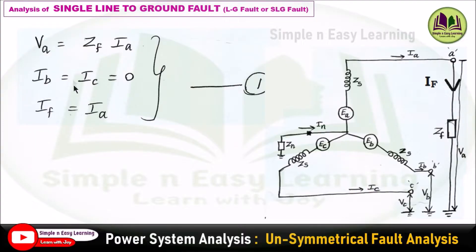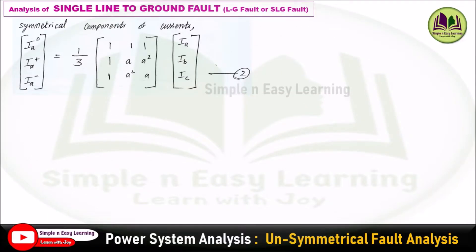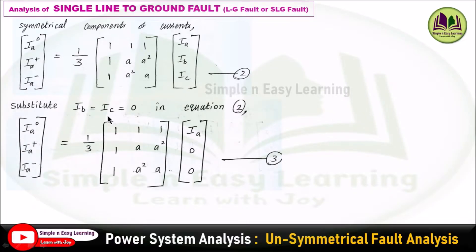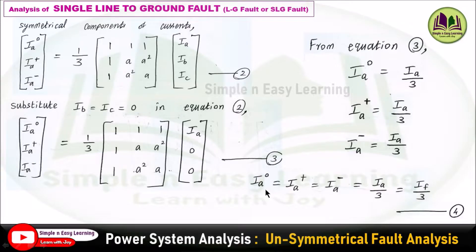The three basic equations are: va = zf × ia; ib = ic = 0; and fault current if = ia. Step 3 — consider the symmetrical components of current. Using the inverse transformation matrix, ia0, ia+, and ia− are expressed in terms of ia, ib, and ic. Substituting ib = ic = 0, expanding the matrix gives: ia0 = ia/3, ia+ = ia/3, and ia− = ia/3. Therefore ia0 = ia+ = ia− = ia/3. This is equation 4.